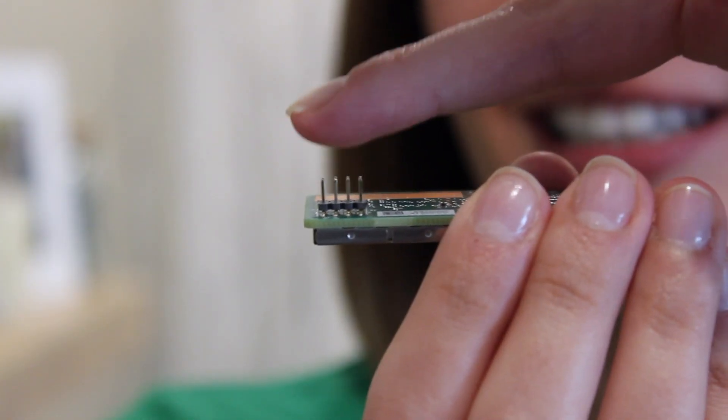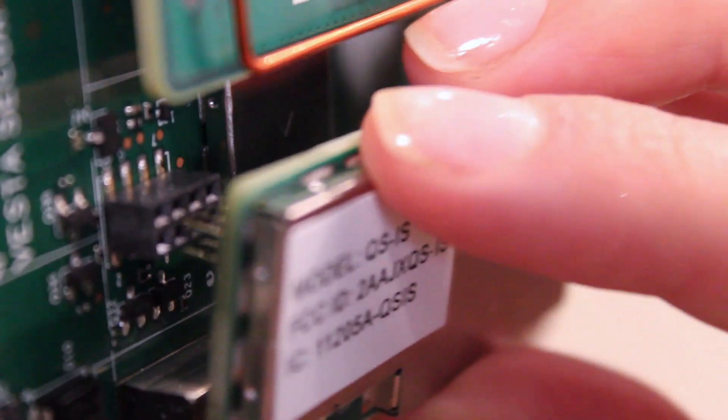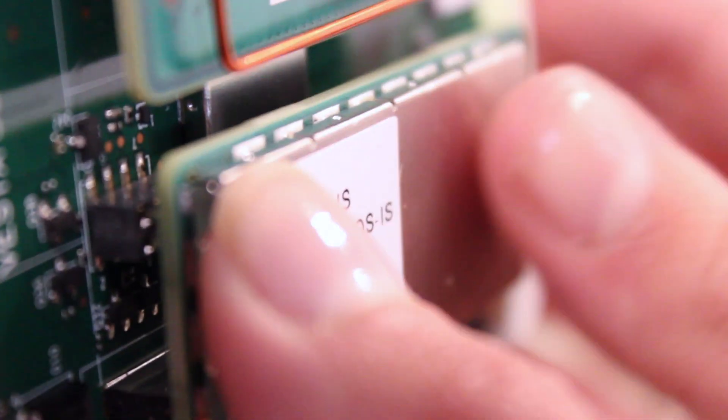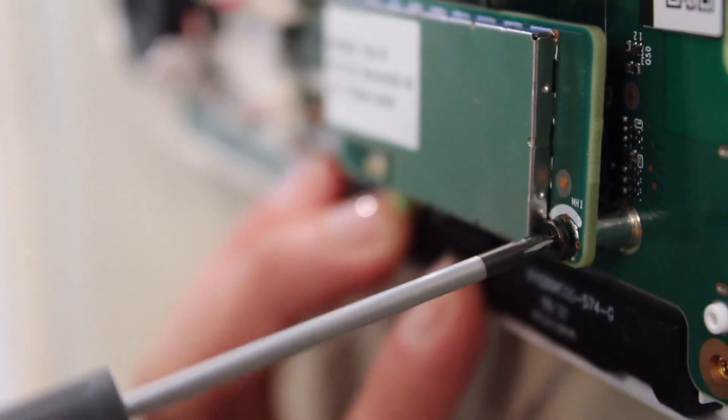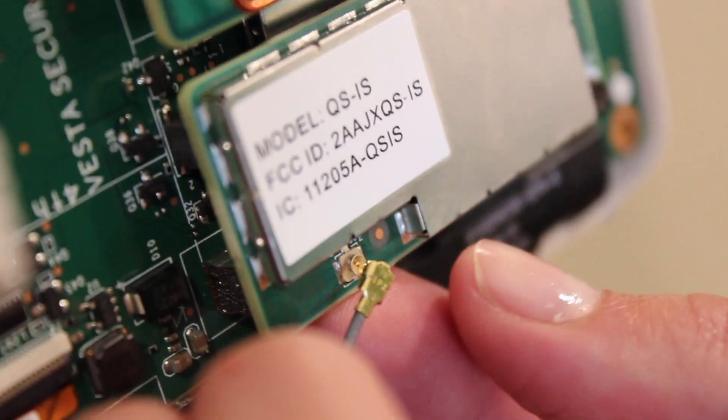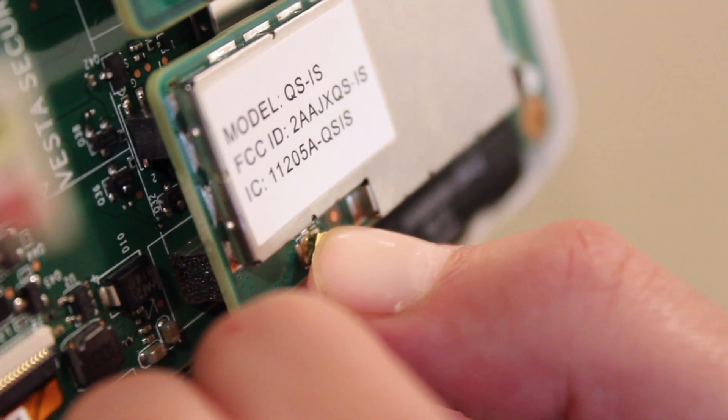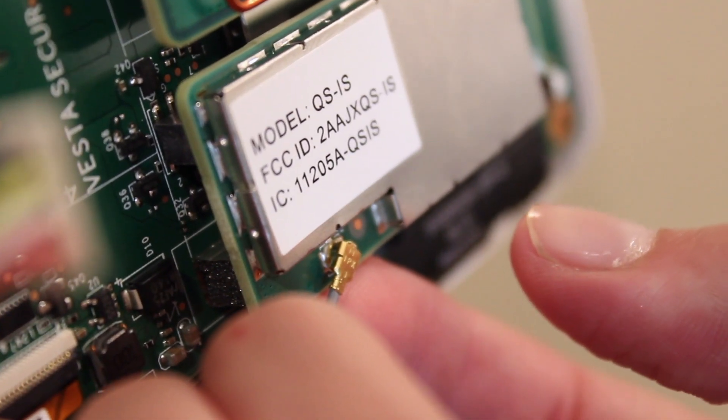Next line up the eight pin connector and press the daughter card into place by pushing it down all the way. Lock it into place using the provided screw. Using a finger or thumb carefully press the antenna connector into place on the daughter card.